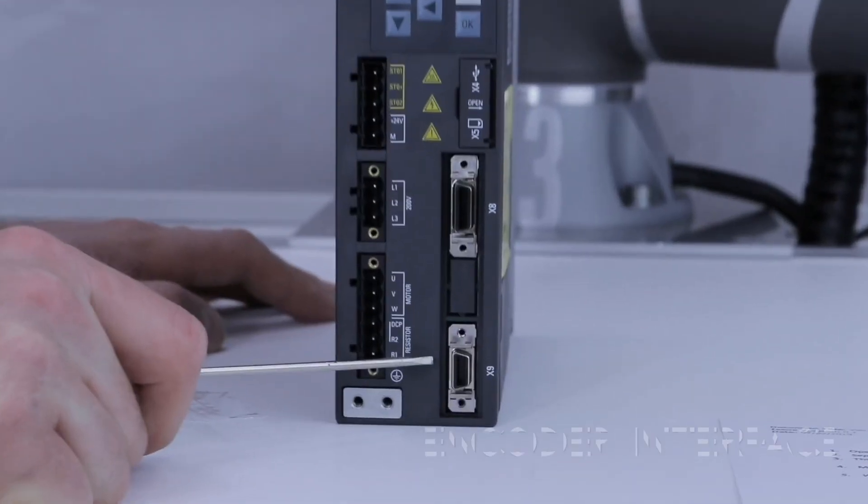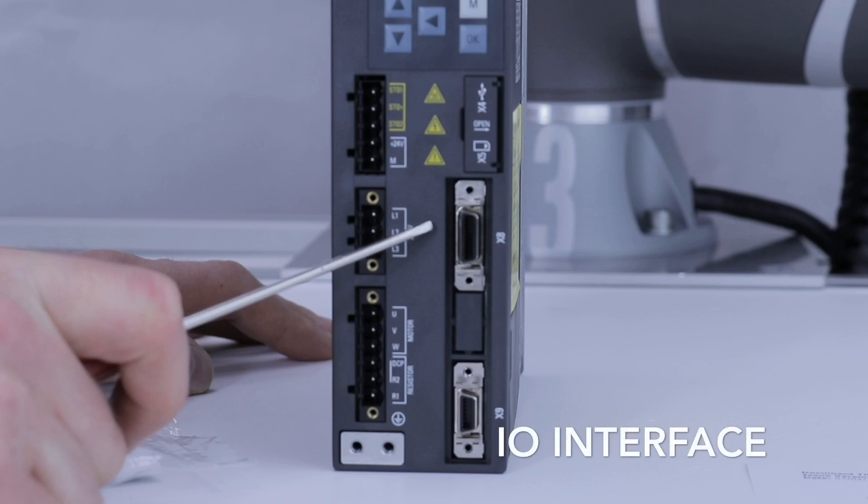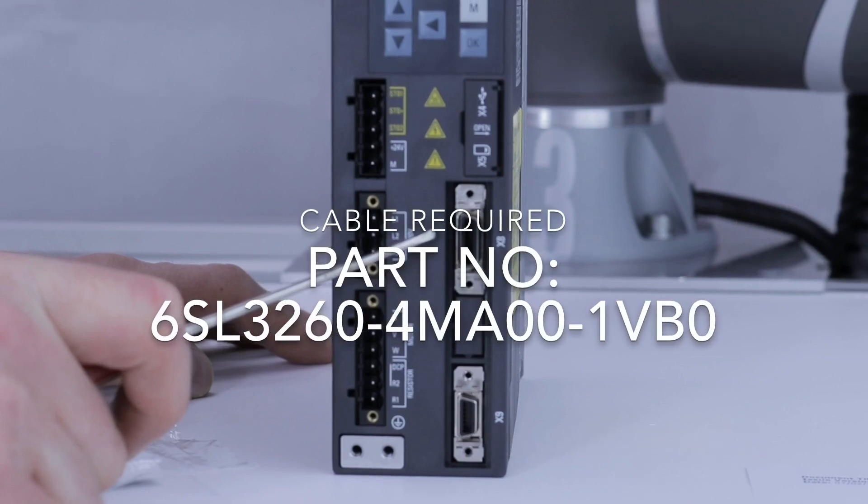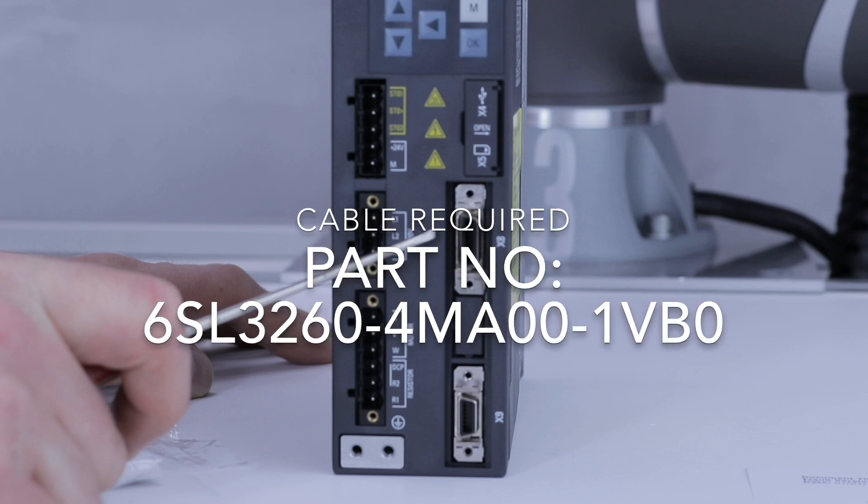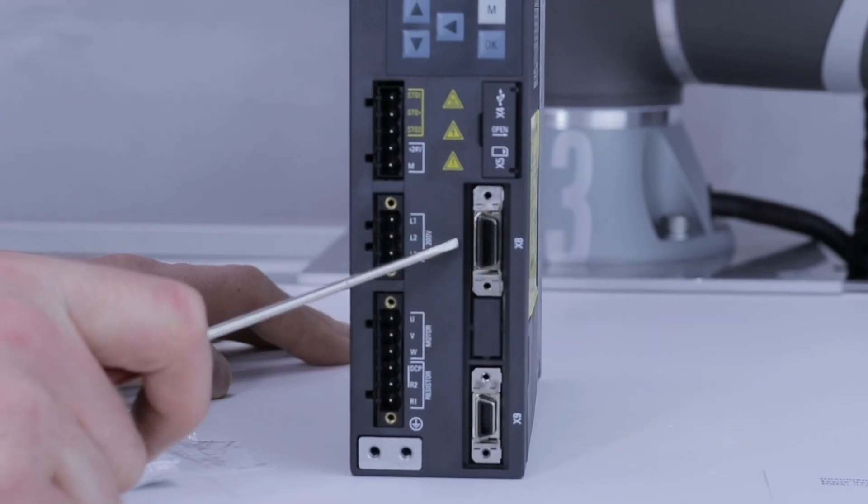This is where the green motor feedback cable is connected. This is where the IO cable is connected, which is used to connect digital input and output signals to the drive. Please note that this cable is required if you wish to use a brake motor on the 200V V90 variant.